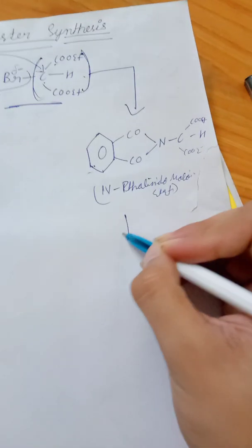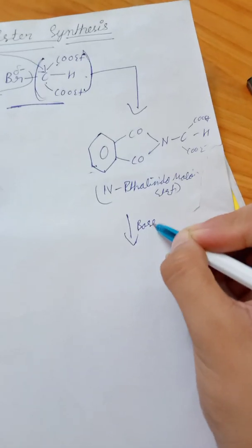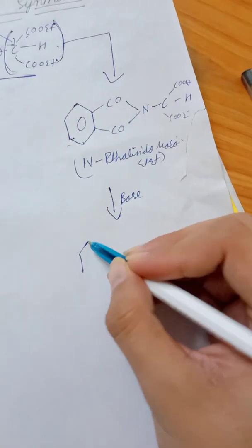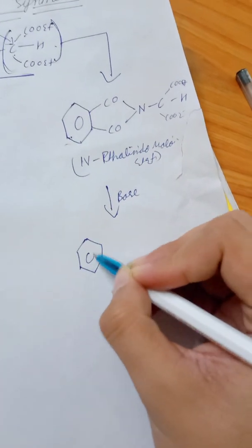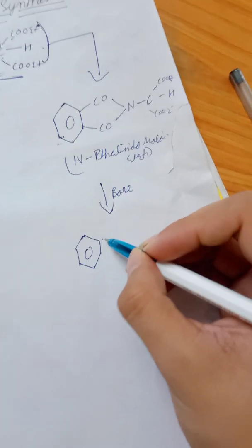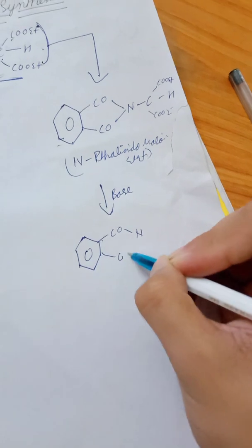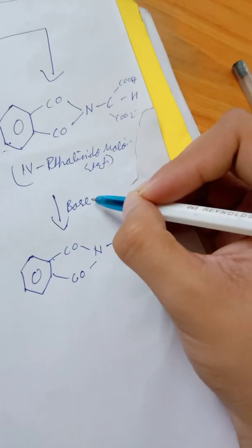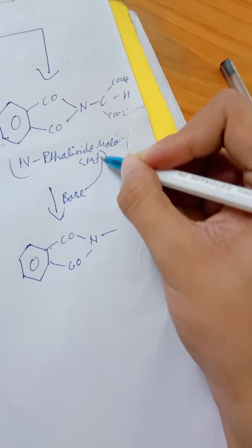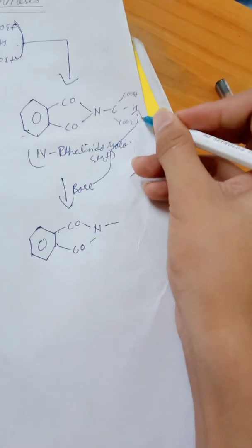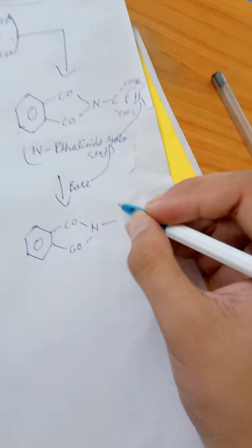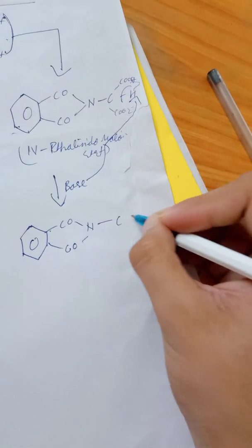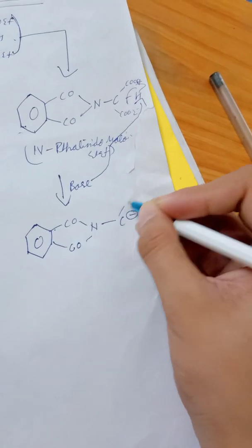Now we will react it with a base like we do it in Gabriel phthalimide reaction. So the product will be formed. What will this base do? It will react with this H and remove it, and as a result a negative charge will occur on carbon and all the products will remain the same.